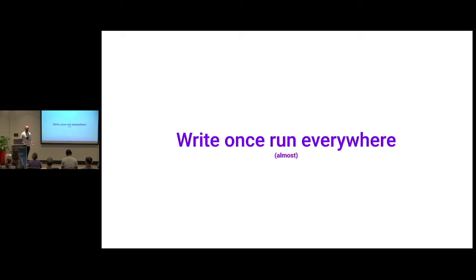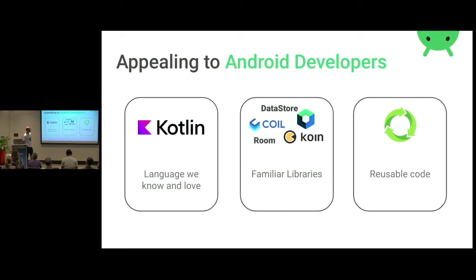The idea is you write once and run everywhere — almost. And it is appealing to us Android developers because Kotlin is a language we know and love. Kotlin Multiplatform allows you to use libraries you already know, such as Room, Koin, Jetpack Compose, Coil, or Datastore. And of course you can reuse code you already wrote — if you have Kotlin code that does not call Android APIs, you can absolutely reuse it by just moving it into the common module.